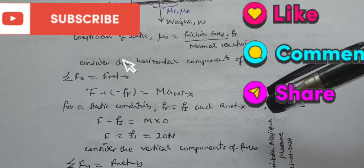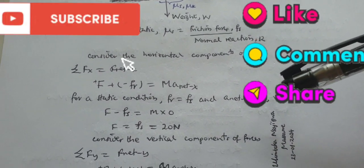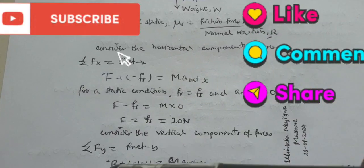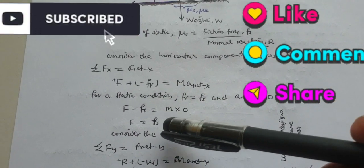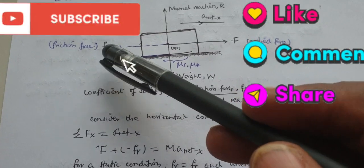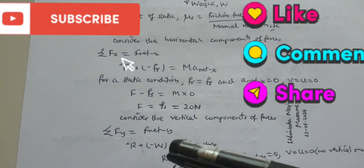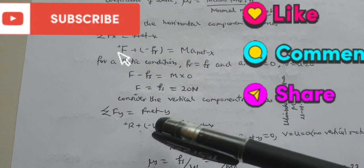The force applied must be equal to the friction static. F_s is equal to 20 newtons. Consider the vertical components.